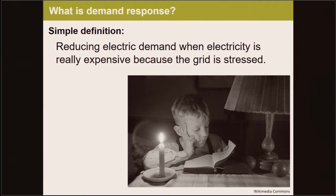Here's what we're trying to prevent: reading by candlelight. Today, we're talking about blackouts or brownouts caused by too much load being placed on the grid. To prevent this, utilities can build more capacity, such as power plants and the infrastructure to support them, but that's an expensive proposition. Alternately, they can motivate consumers to reduce their demand during periods of high load, which is much less expensive per kW. One way to do this is demand response, which very simply is reducing electric demand when electricity is really expensive because the grid is stressed.